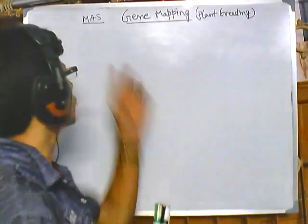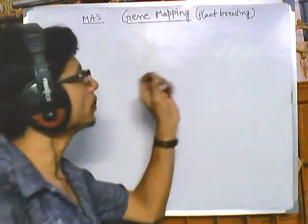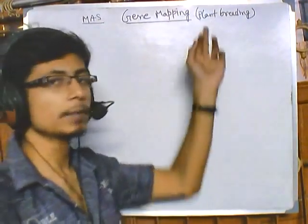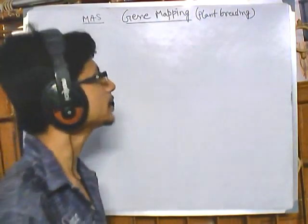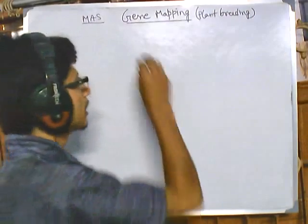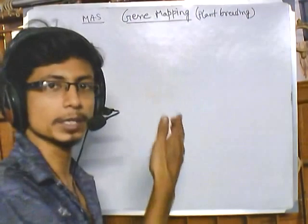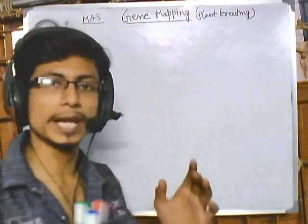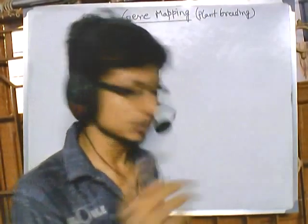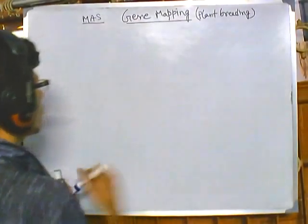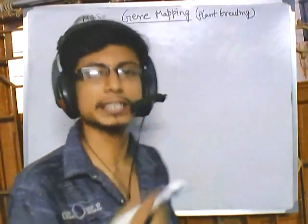Before going into detail about marker-assisted selection and relating it with gene mapping, we will talk a little about plant breeding and normal phenotypic selection. Plant breeding simply means we have two different parental plants — parent one and parent two — which are crossed with each other to generate F1 plants.